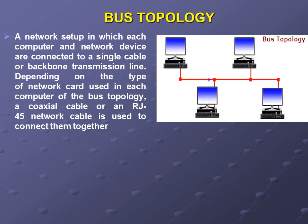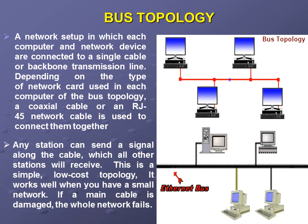Bus topology is a network setup in which each component and network device is connected to a single cable or backbone transmission line. Depending on the type of network card used, a coaxial cable or an RJ45 cable is used to connect them together. As the diagram shows, all devices share one cable, which makes it simple and easy to set up, but it has some drawbacks.